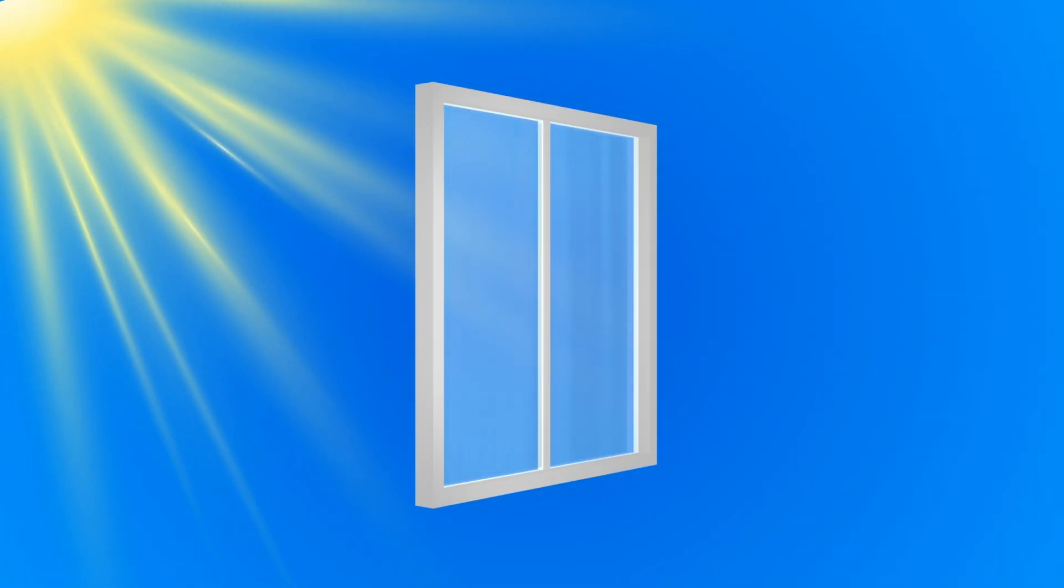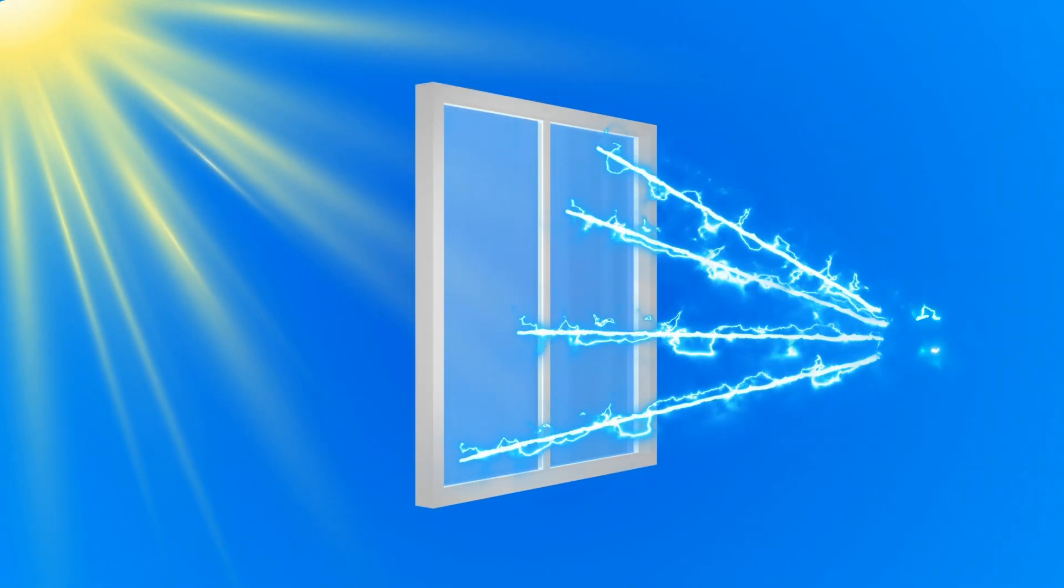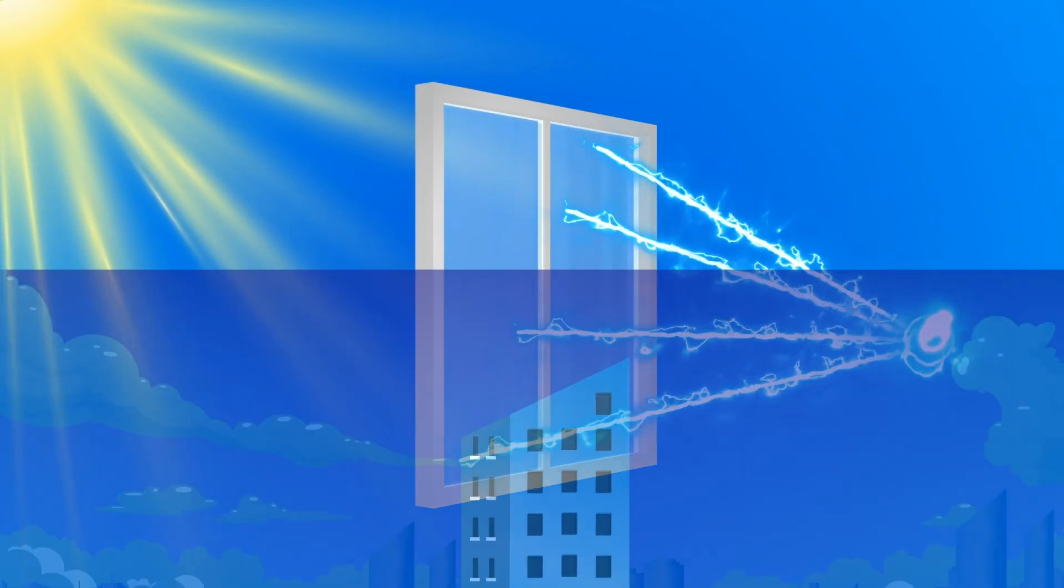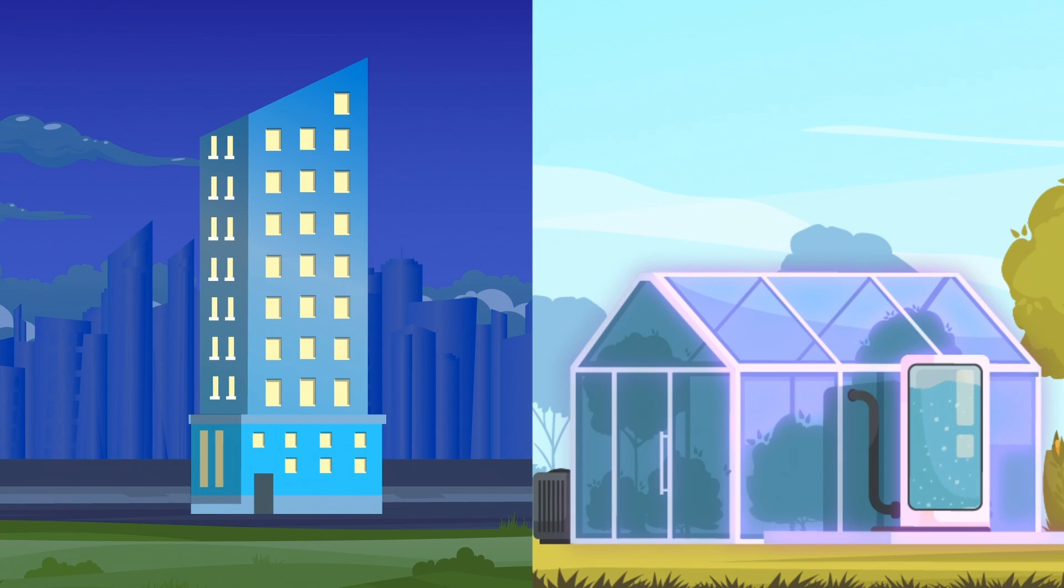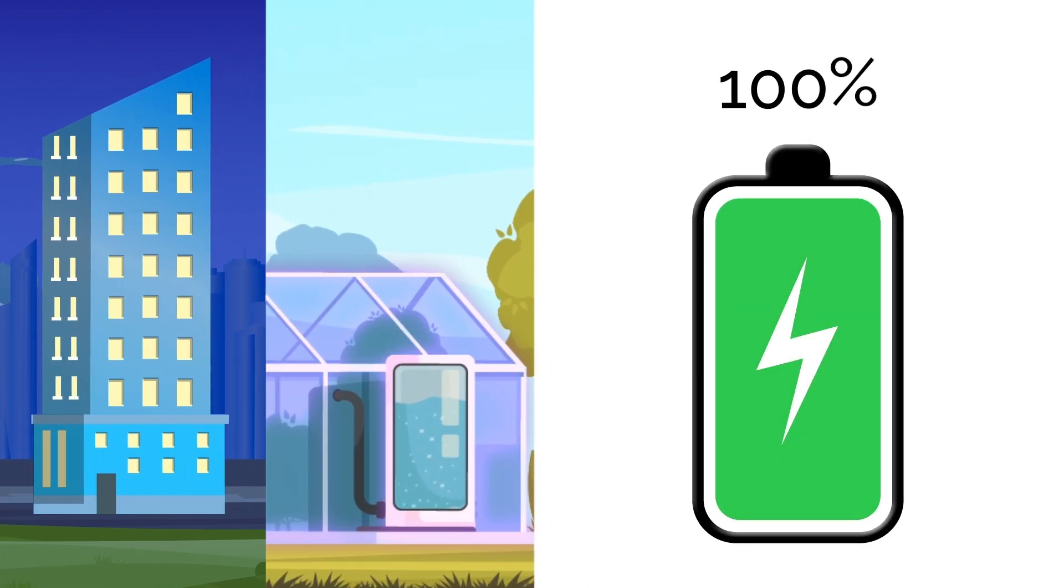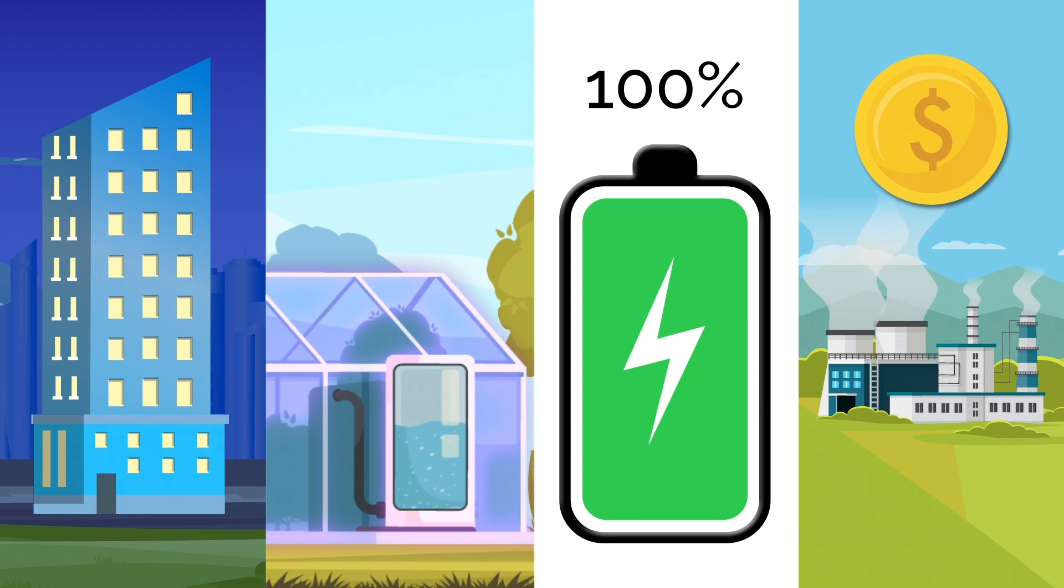Imagine the sun shining on glass and causing the glass to create electricity. Imagine that electricity powering a building, powering a greenhouse, stored in batteries for later use, or even sold back to the grid for credits.